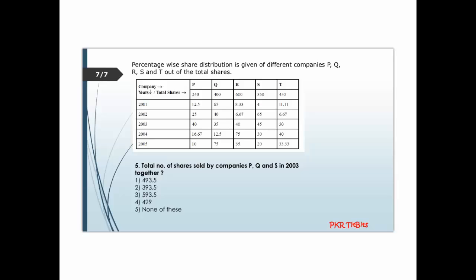Next question: total number of shares sold by companies P, Q, and S in 2003. Company P in 2003: 35 percent of 400. 4 times 35 is 140, so company P gives 140 shares.